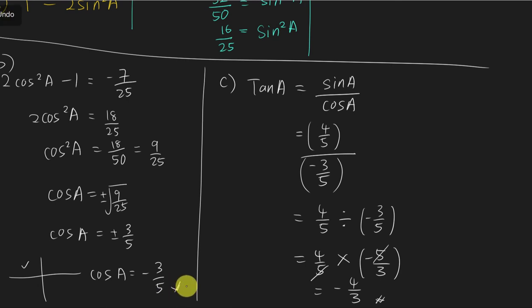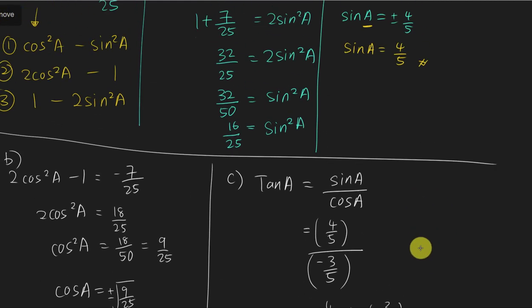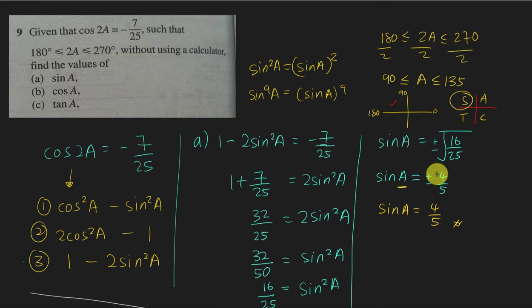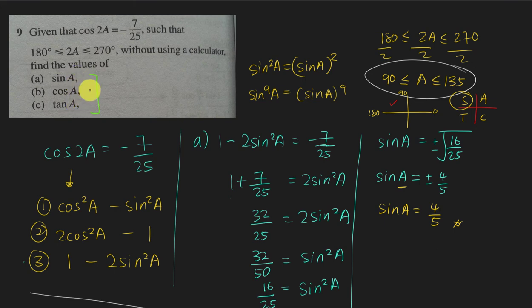The angle A is confirmed to be in the range of 90° to 135°, so the range is correct. Whenever you see the range given in 2A but the values you need to find are in terms of A, make sure you divide the range by 2. Unless the question asks for sin 2A, cos 2A, and tan 2A — then you can directly use the quadrant for 2A. If you assume you're in the third quadrant when you're actually in the second, you'll get the wrong signs for sine, cosine, and tangent.